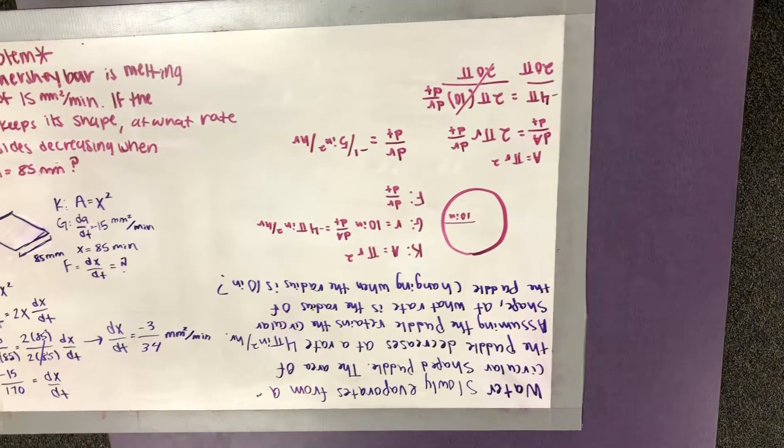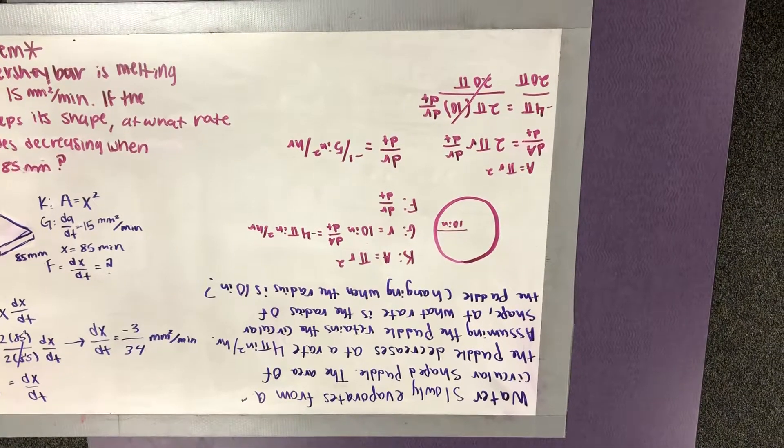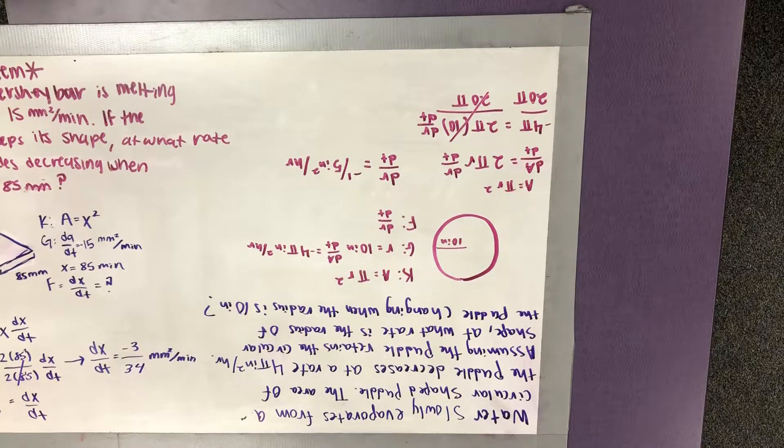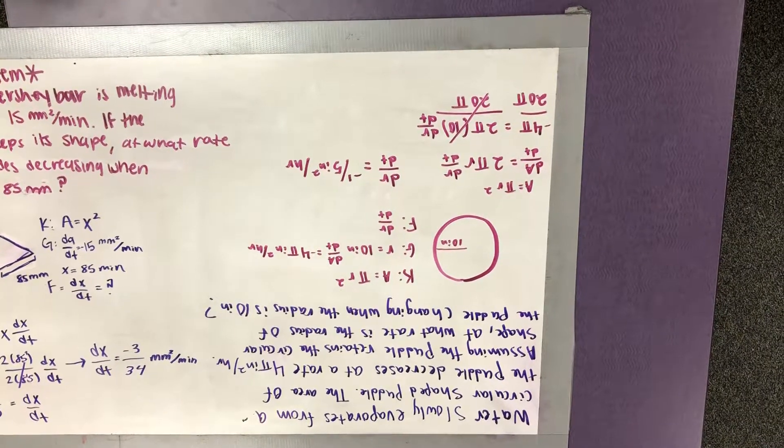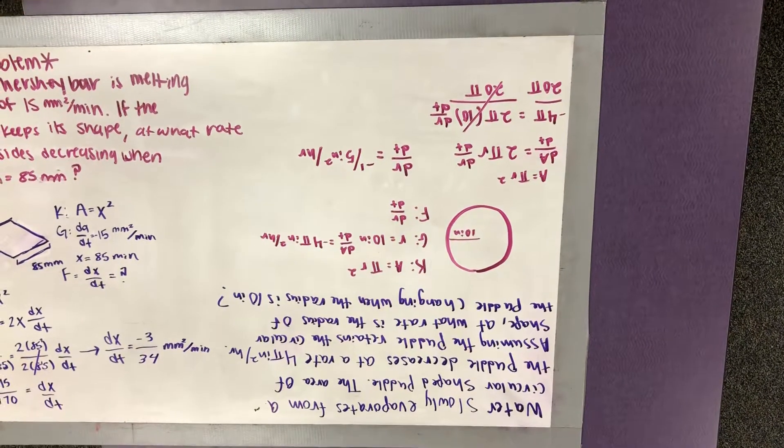We are given the rate of the circle, which is 10 inches, and then also the derivative of the area, dA over dt, which is negative 4 pi inches squared per hour. And we know this is negative because it is decreasing. And so we are finding dr over dt, or the derivative of the rate.